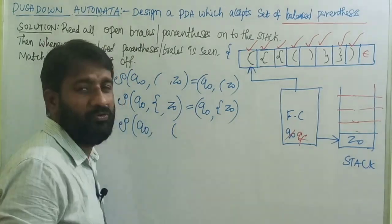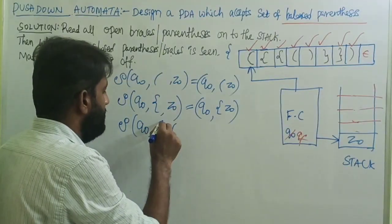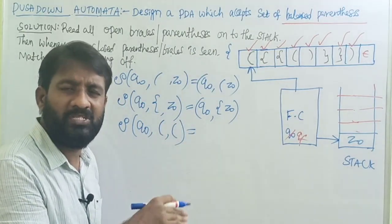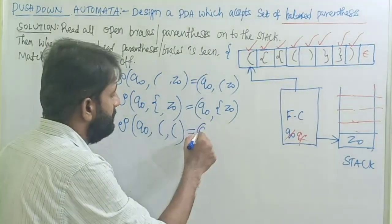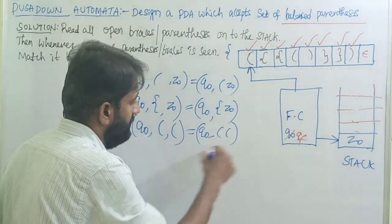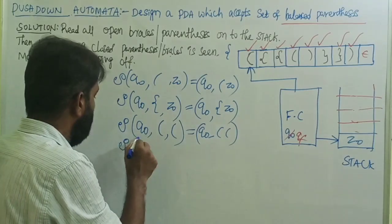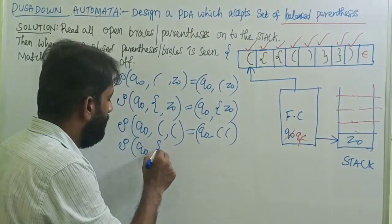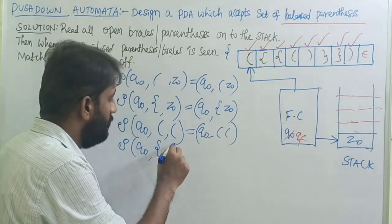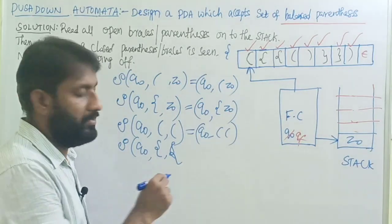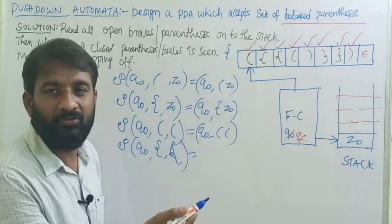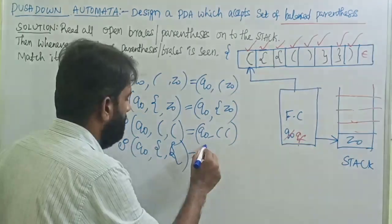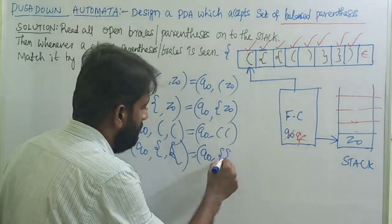If the top of the stack is open brace and next input is open brace, add open brace onto the stack: δ(q0, {, {) = (q0, {{). If the next input is open parenthesis and top of the stack is open parenthesis, add open parenthesis onto the stack: δ(q0, (, () = (q0, ((). All open symbols are pushed onto the stack.